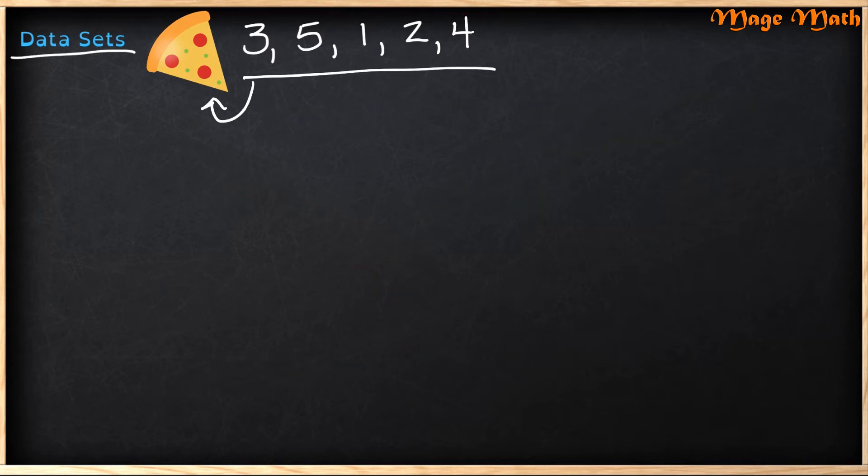Now we're going to look at something called the median. Median just means the middle number. Now, if you look at our data set, I see that one is the middle number, but that wouldn't be correct because our numbers are not in order. So you have to order the data set from the least or the smallest to the biggest. So let's do that now.